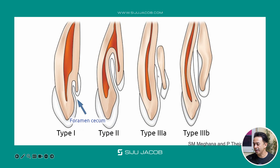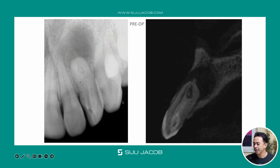In type 3b you can see there is complete invagination and then communication apically with the apical foramen. It's not just a separate communication with the periodontal ligament — it goes through and through and then communicates with the apical foramen. So you have a lesion which is through and through. This is the type 3b kind of case.